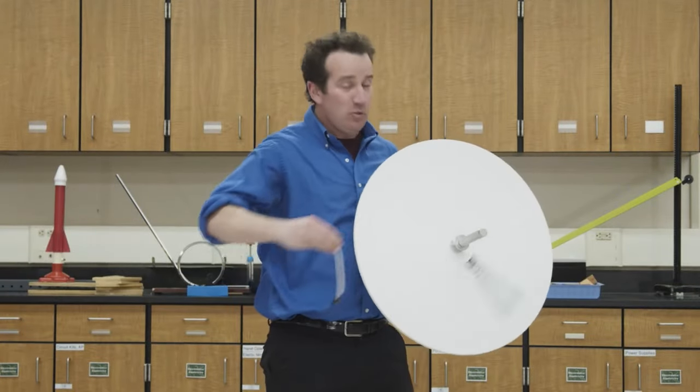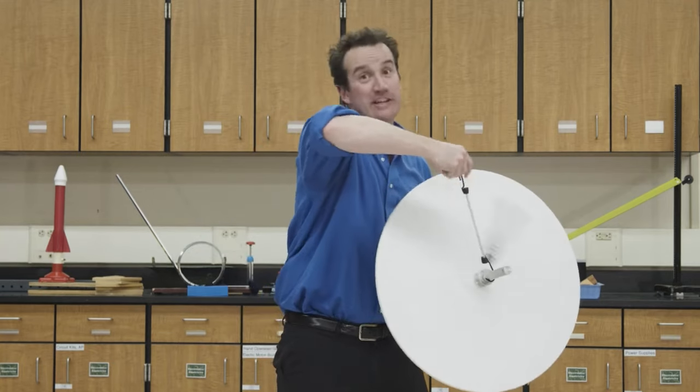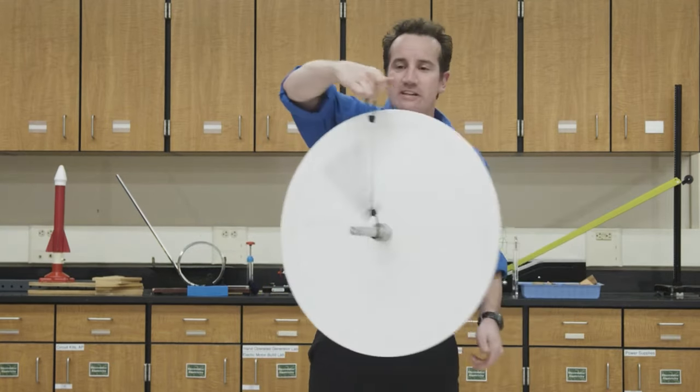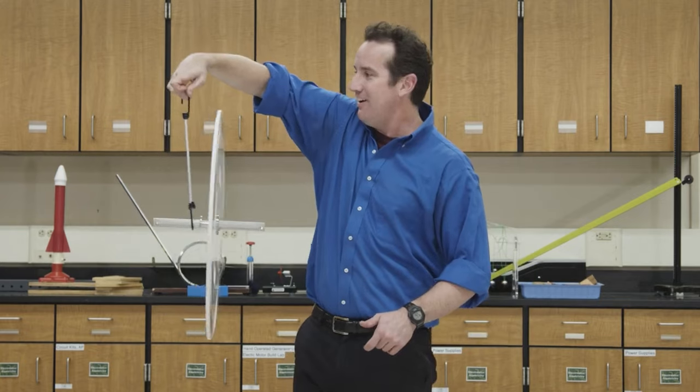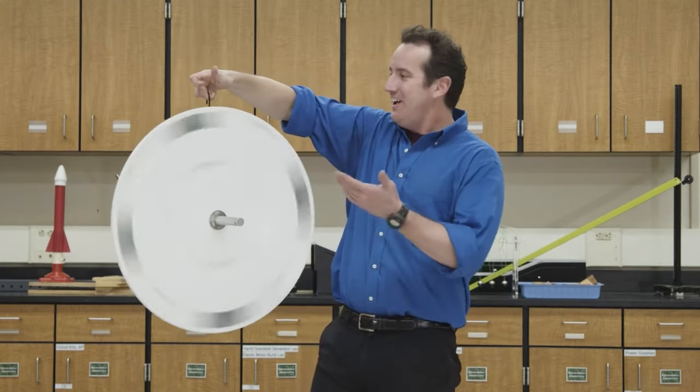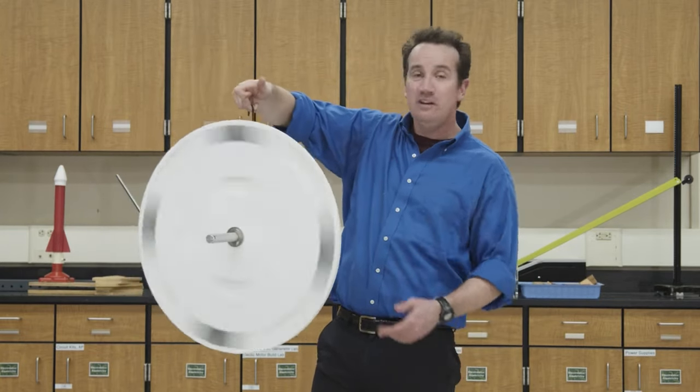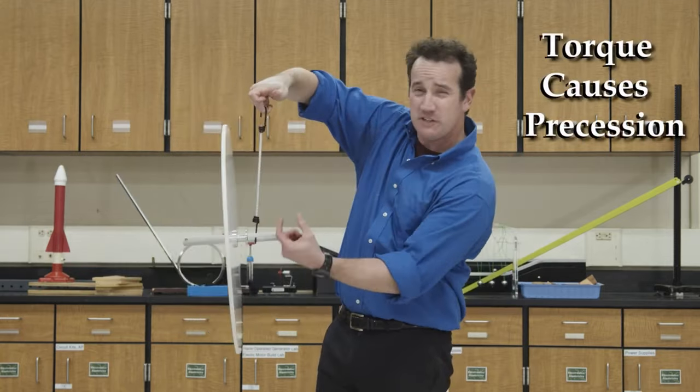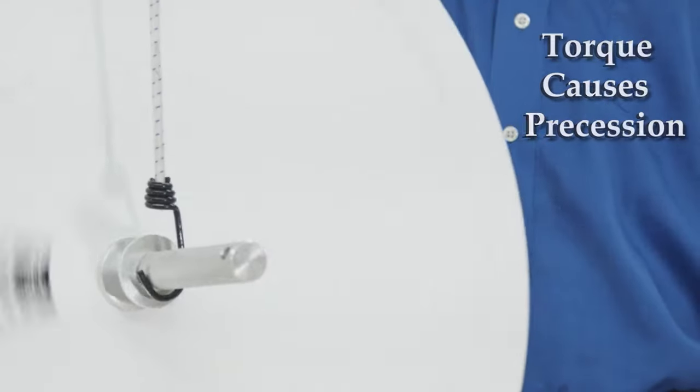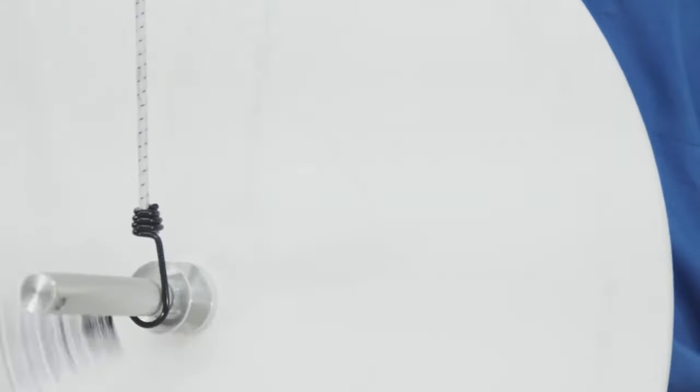Next, we note that where you attach the hook, the length of the lever arm, has a significant effect on the precession. It's almost not precessing at all because there's very little torque from the small radius. It really is the torque that causes the precession.